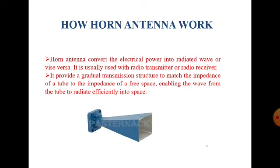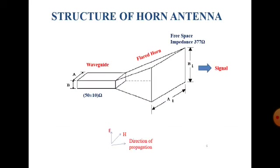Next, how does a horn antenna work? A horn antenna converts electrical power into radiated waves, or it can also convert radiated waves into electrical power. It is used with a radio transmitter or receiver. It provides a gradual transition structure to match the impedance of the tube to the impedance of free space, enabling the waveguide to radiate efficiently into space.